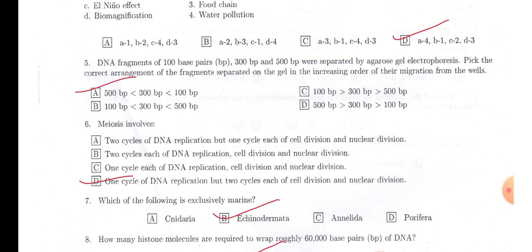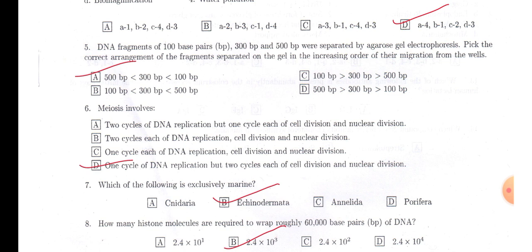Next 300 base pair and then 500 base pair. So option A will be the answer as 500 base pair, the distance from the well is less in case of 500 base pair and more in case of 100 base pair sequence. So option A will be the answer.